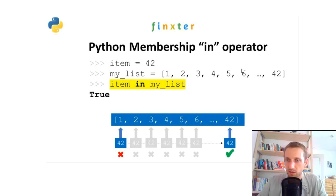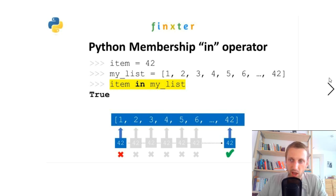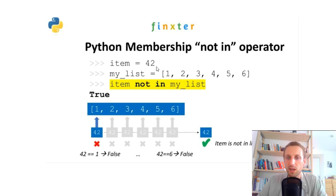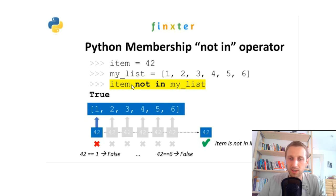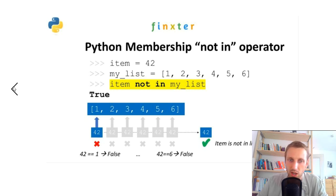In this case it returns true because the element 42 is part of the collection. Similarly, the `not in` operator performs the inverse operation. Say we have the same item but a list without the element 42 — `not in` returns true because the element is not in the data structure.